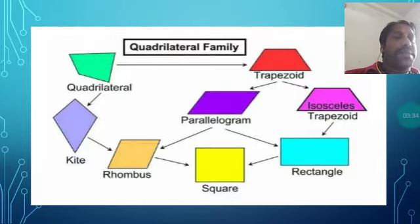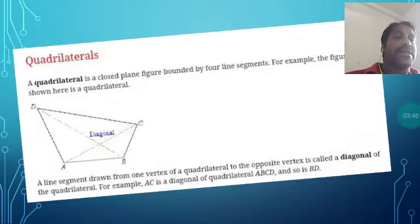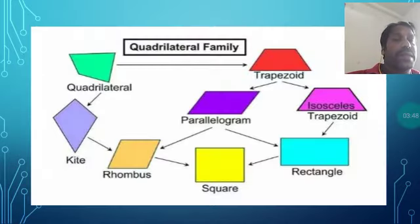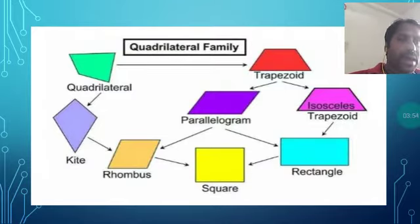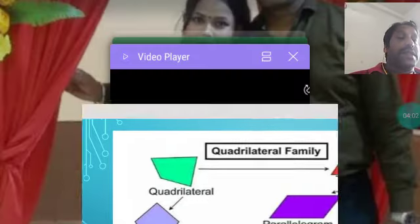There are many shapes in the quadrilateral family: trapezoid or trapezium, parallelogram, rectangle, square, and rhombus. Today we will discuss the square and the properties of the parallelogram, which we are going to use in our video today. Let us see how it can be used.